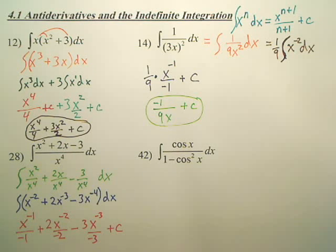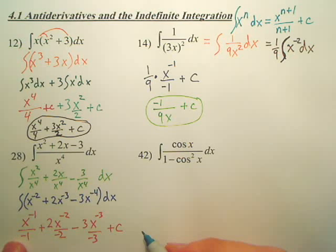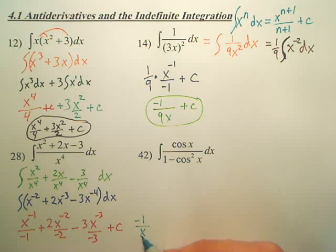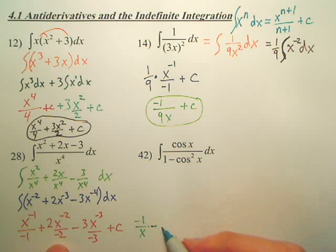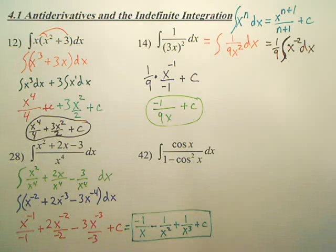So, my answer, well, can I just pull a negative out of all these? Actually, never mind. I'm going to leave it. It's going to be negative 1 over x minus 1 over x squared and this one's going to be plus 1 over x to the third plus c. There is your answer.